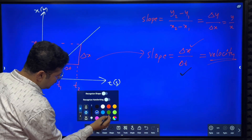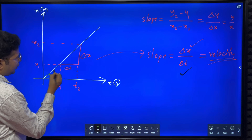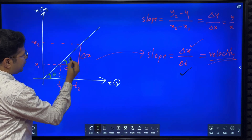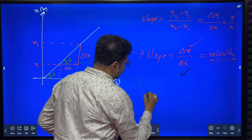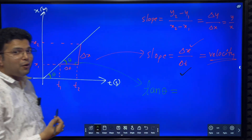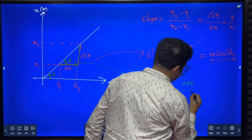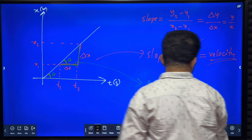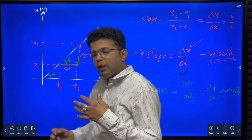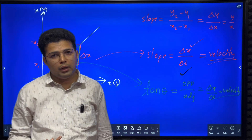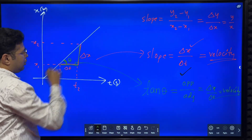One more thing to understand: if theta is the angle between the XT graph line and the time axis, then in the right-angle triangle formed, tan θ = opposite/adjacent = Δx/Δt = velocity. So in a position-time graph, both the slope and tan θ (where θ is the angle between the curve and the time axis) give velocity.